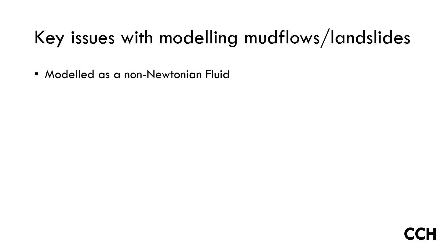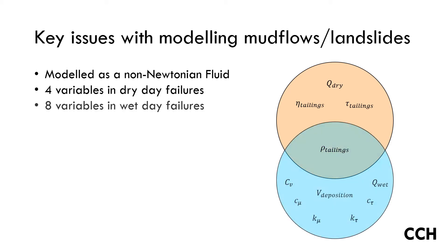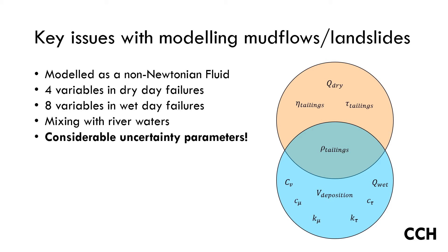Generally when tailings dams fail, they contain such a high concentration of sediment that they do not act like water. As such, these should be modeled as non-Newtonian flows. There are four key parameters in dry day models and eight key parameters in wet day models. Additionally, when flow interacts with large watercourses this reduces the sediment concentration and can affect the properties of the tailings flow. And finally, there is considerable uncertainty in all of these mentioned parameters and mechanisms.